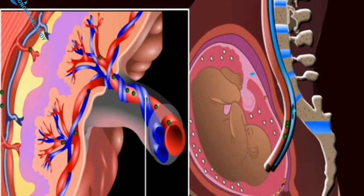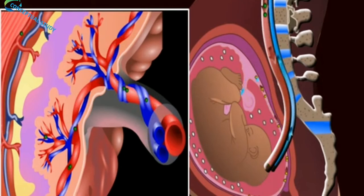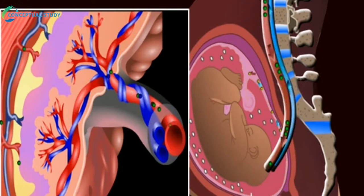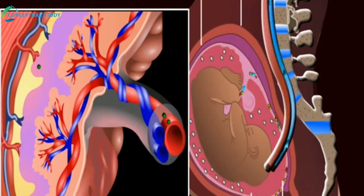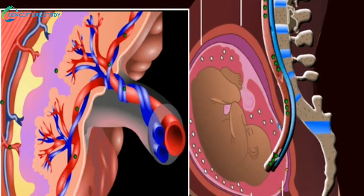The human placenta is chorionic and metadiscoidal. The amniotic cavity is surrounded by three layers called chorion, amnion and allantois. These layers help in nutrition, respiration and excretion to the developing embryo.